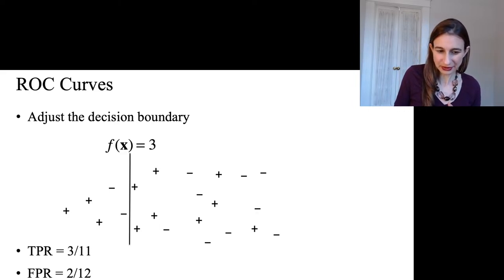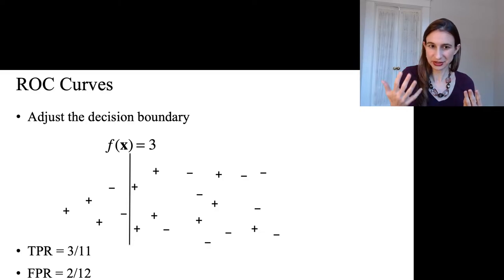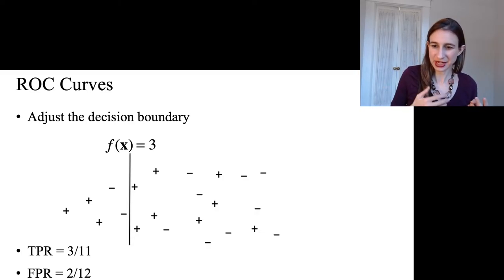Here it's 3 out of 11, because 3 positives out of 11, and then 2 out of the 12 negatives.